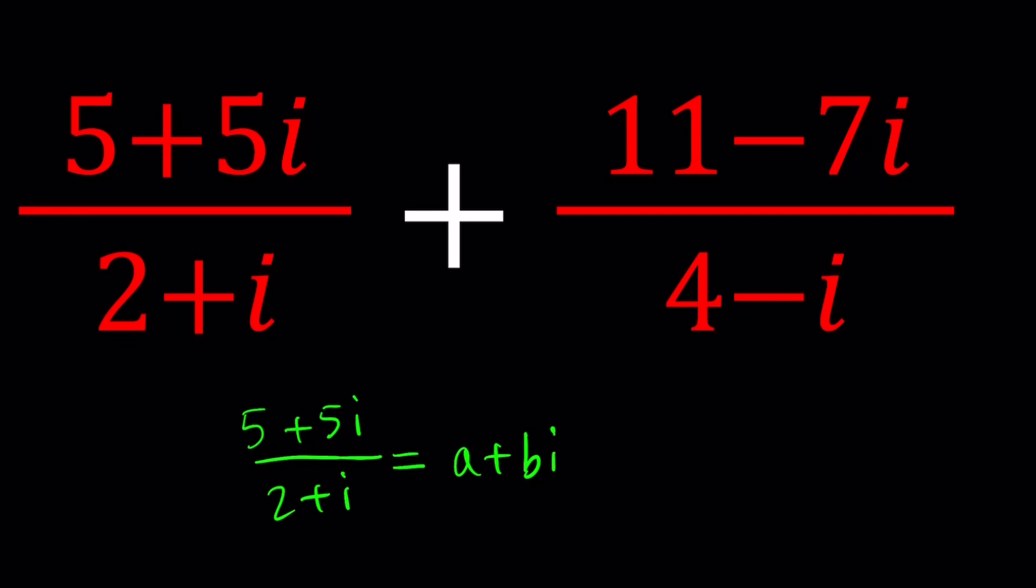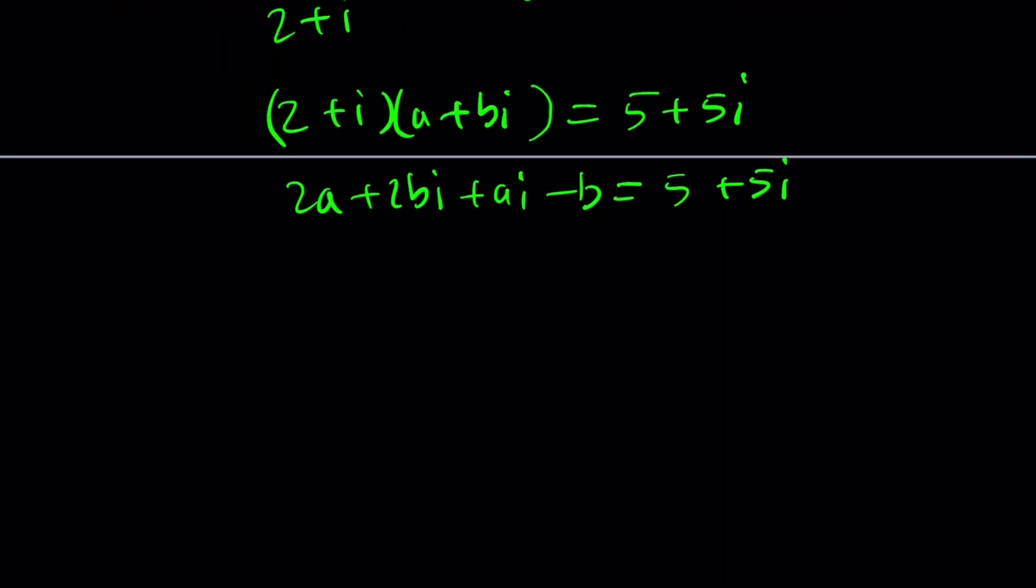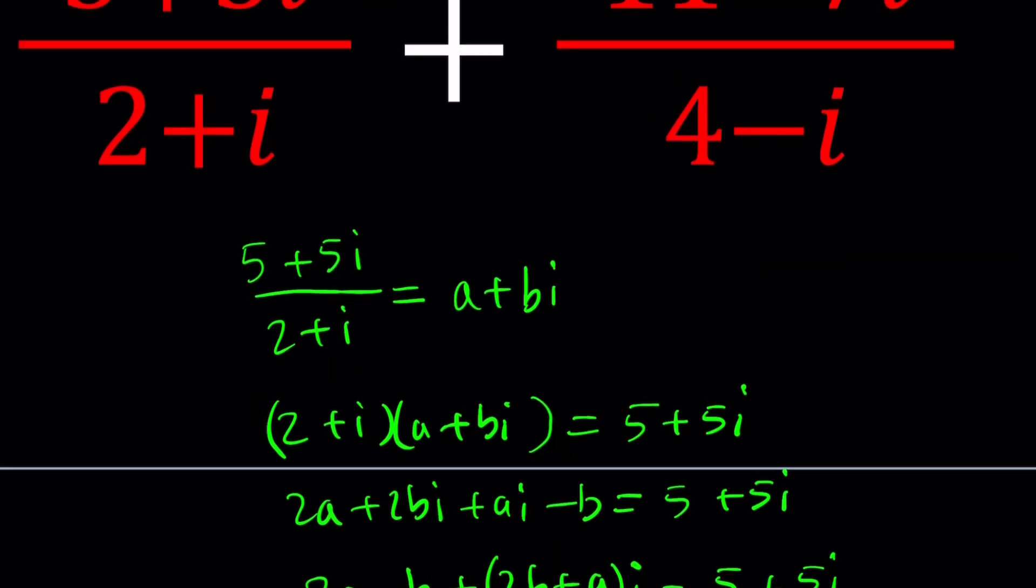Let's call that a plus bi, which is appropriate for this channel. From here, you can cross multiply and write this as 2 plus i times a plus bi equals 5 plus 5i. And then you can go ahead and distribute. This is going to give you 2a and then plus 2bi minus b equals 5 plus 5i. From here we get 2a minus b along with 2b plus a. 2b plus a is going to be the imaginary part. And then what we have to do is set up the real parts and imaginary parts separately, and then from here you're going to find a and b. Therefore, you're going to find the answer to the division problem.